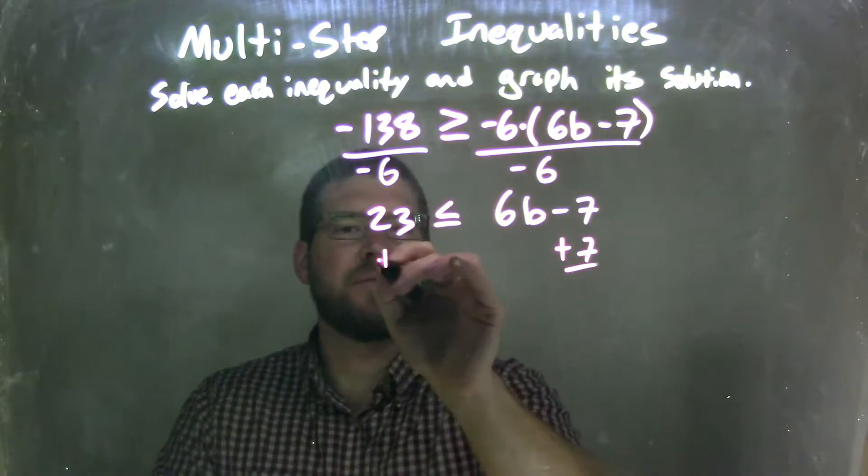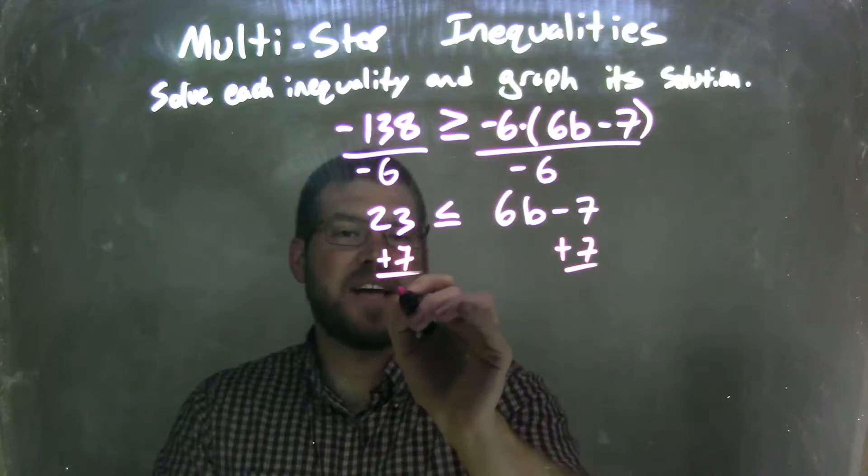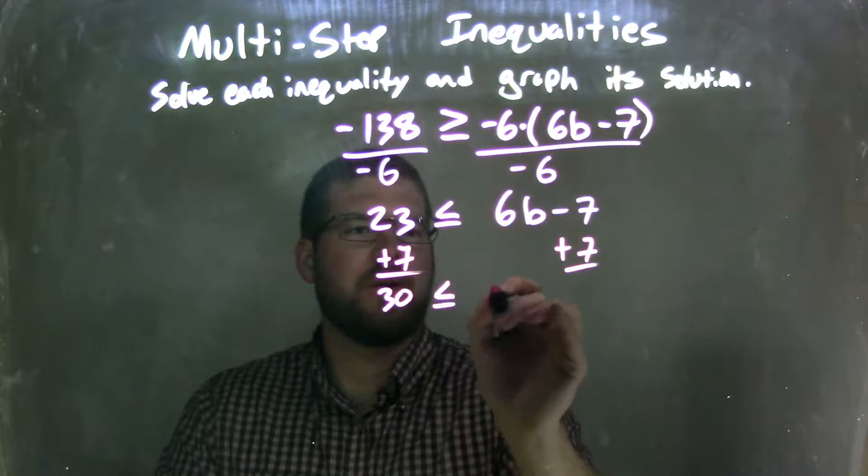So now let's just add 7 to both sides. 23 plus 7 is 30, is less than or equal to 6b,